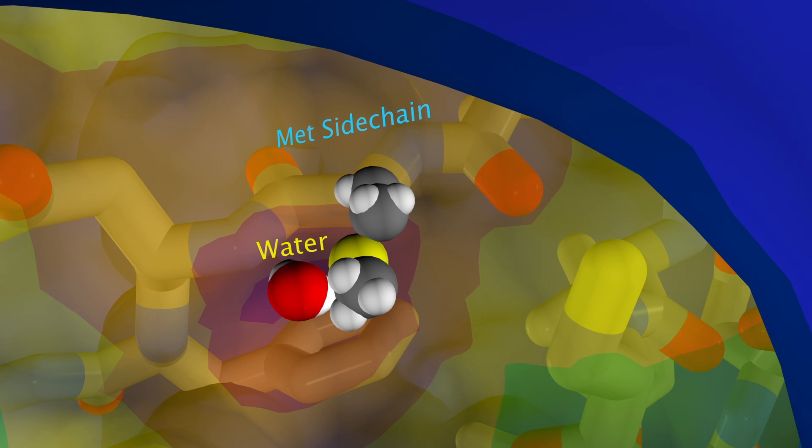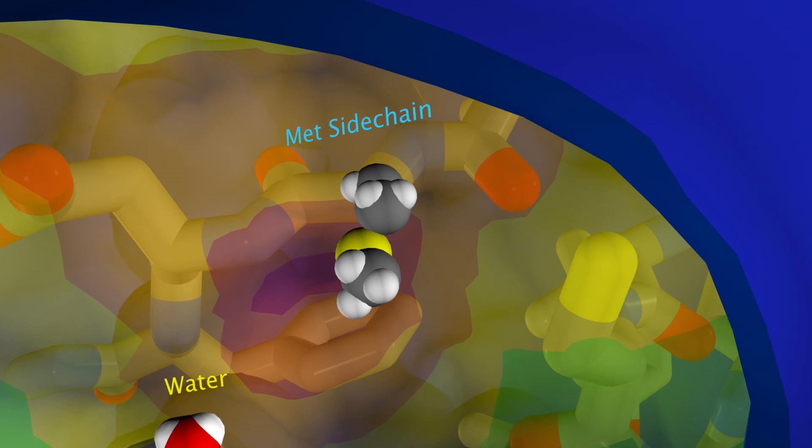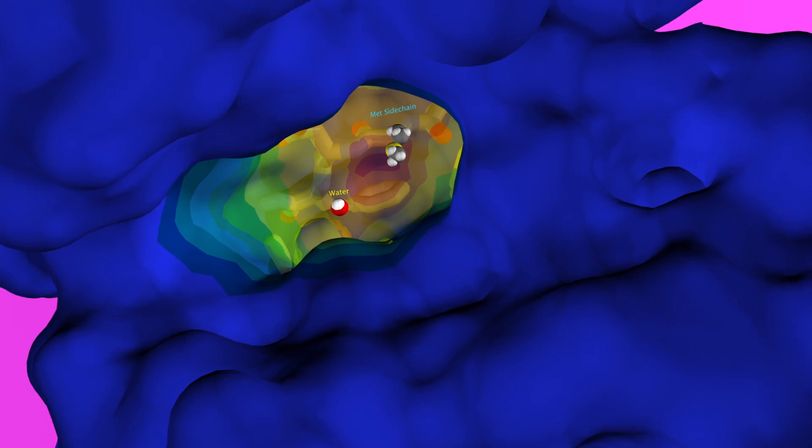The side chain of methionine is comprised of sulfur and more carbon atoms and is therefore a larger entity in the binding pocket. This bulkier side chain pushes the water molecule away from the original region.